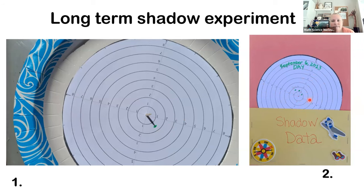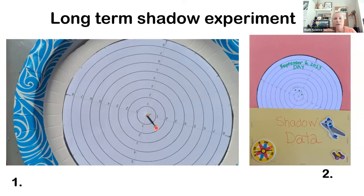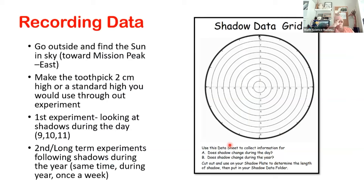When we find our location, we make a dot at the end of the shadow. We'll take the shadow length at least three or four times during the day. Here's one I did for September 6th — you can see one dot, two dots, three dots. My shadows got longer as the day went on. I'll put my shadow data in my folder and come back to use it again every week. You can use the lines already on the disc for measurements, or get a ruler. This shadow right here is past the first line but not quite to line two, so I'd call it about 1.5.